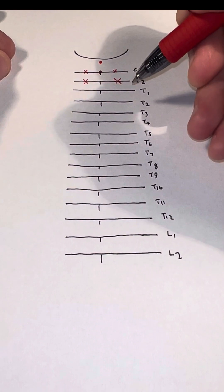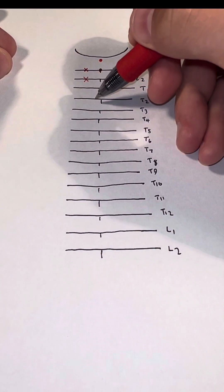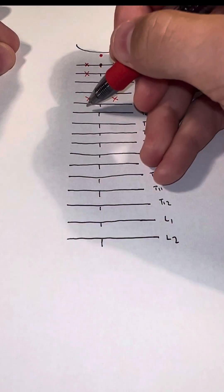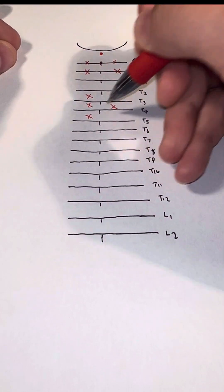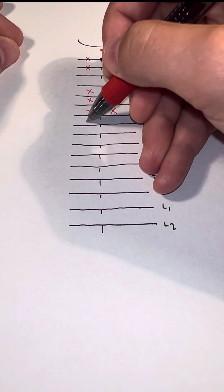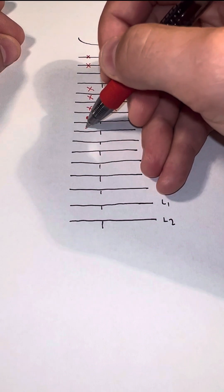Next, hop a couple spaces and move to between T2 and T3. X here, X here, and then three in a row. On the left side, draw one circle in the middle, another one here.